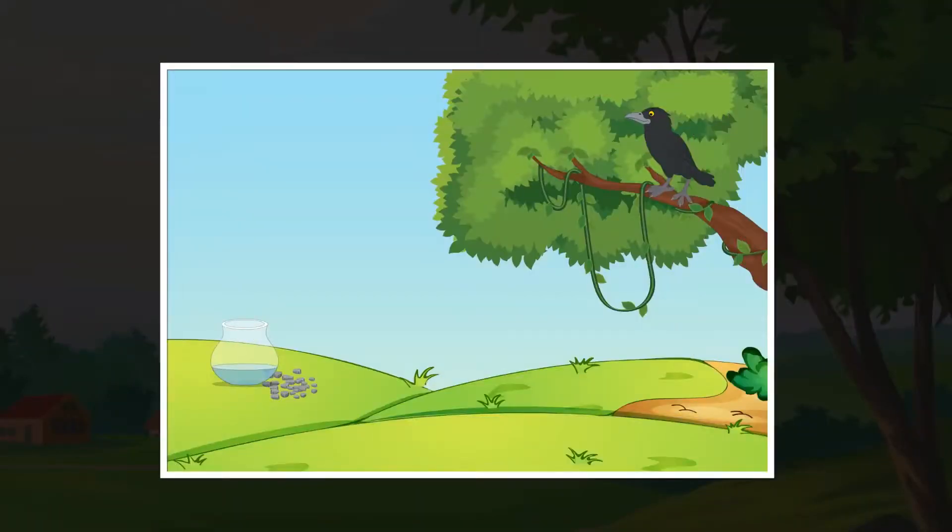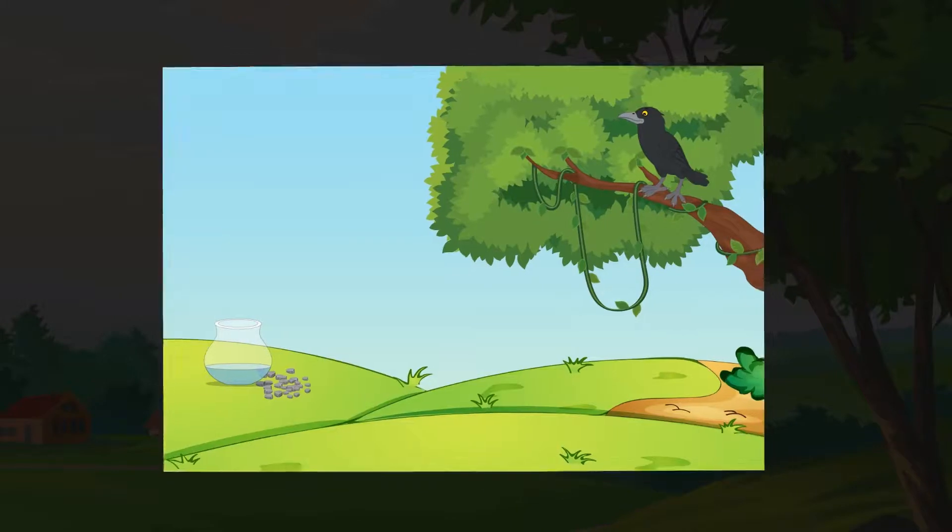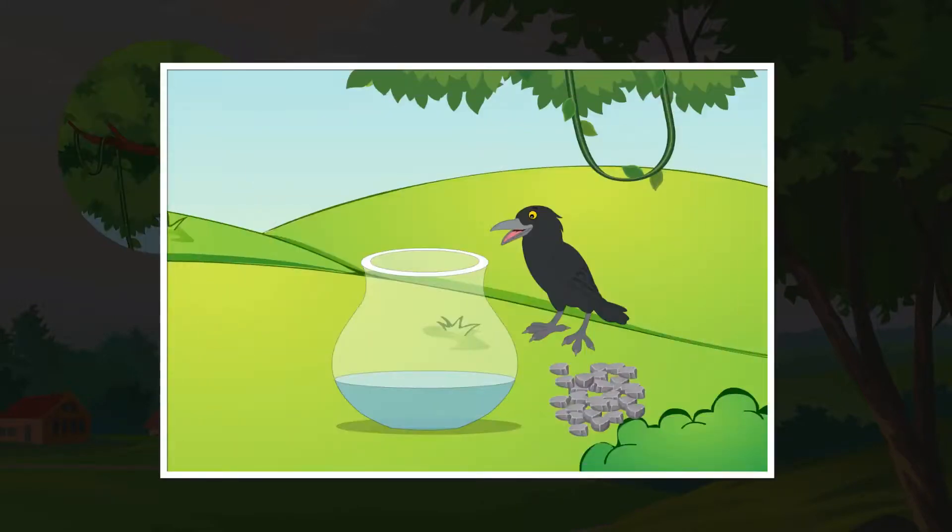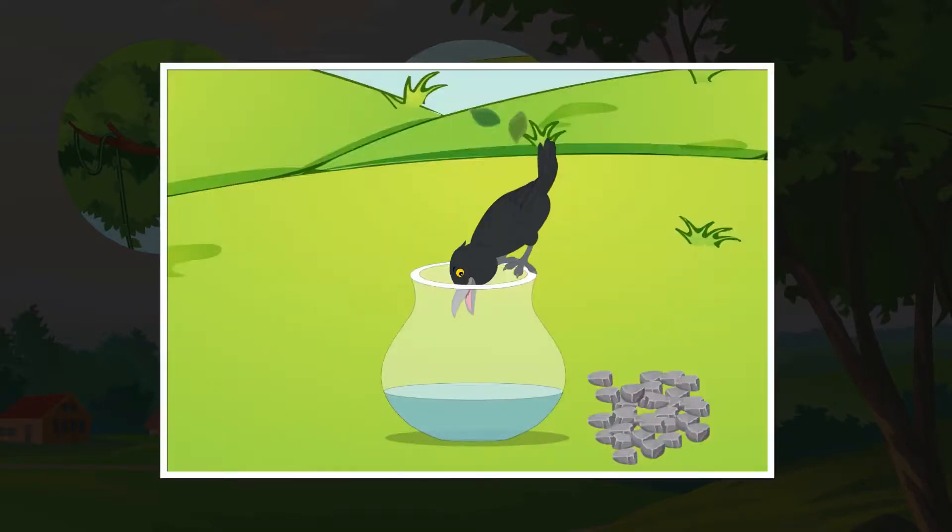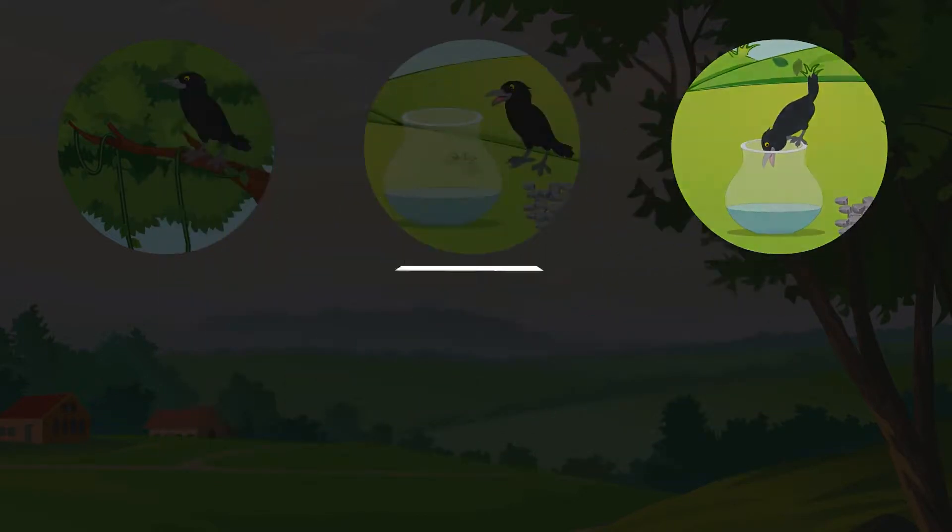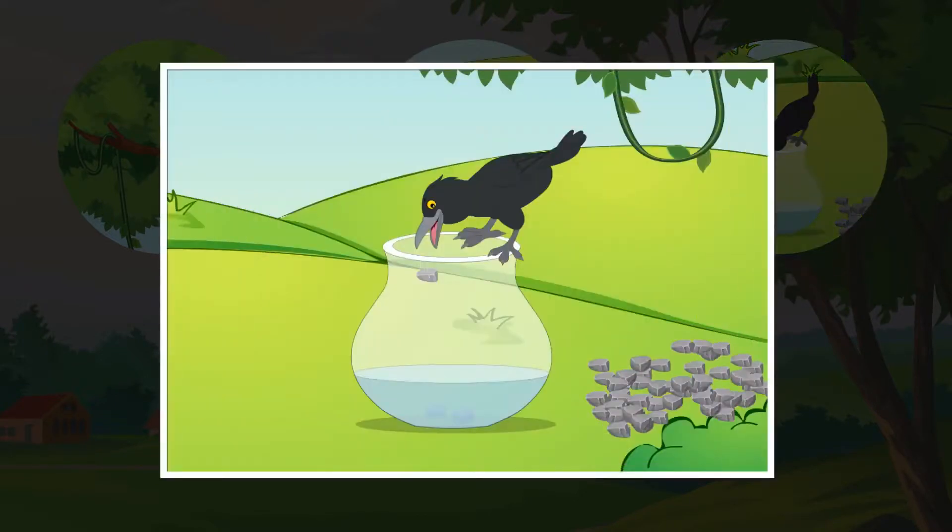There is a crow in this picture. The crow is thirsty. The crow sees a pitcher and becomes happy. The pitcher has very little water. The crow drops little pebbles in the pitcher. The water level rises. The thirsty crow gulps down water to his heart's content.